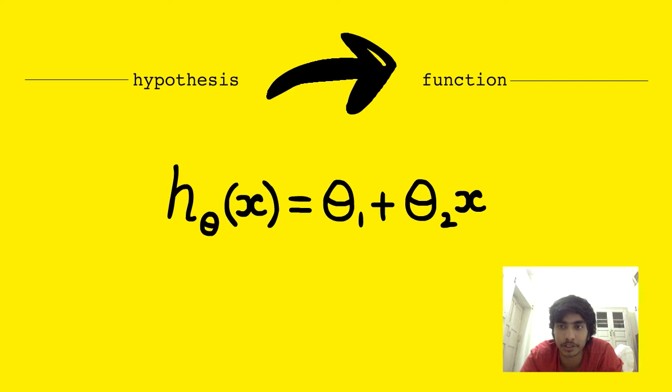This current hypothesis function is a linear function which would give us a line of best fit through our graph.